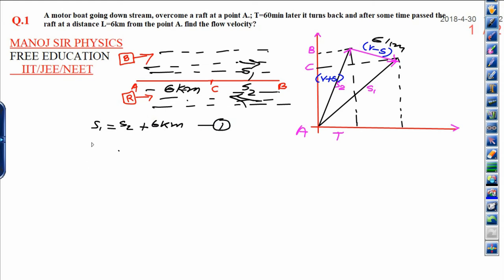Now we will talk about S1. S1 is the distance, that is speed into time. Speed is the velocity of motor boat plus velocity of the raft - relative speed in downstream - and time is given, that is 1 hour. I am writing 1 hour equals S2. S2 is Vm minus Vr into time, which is not given, so I'm taking it as T, plus 6 kilometers.